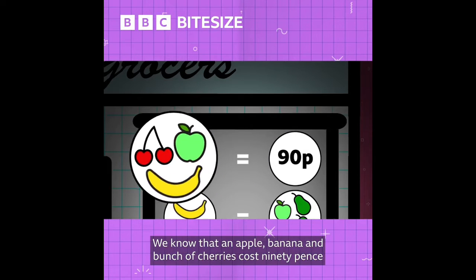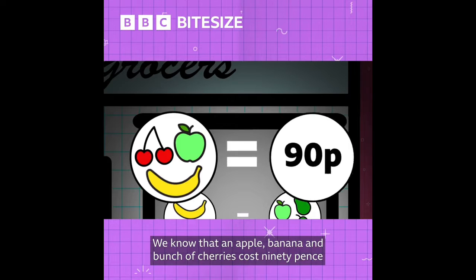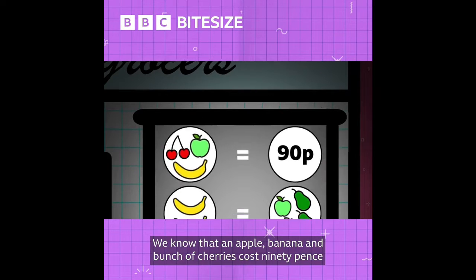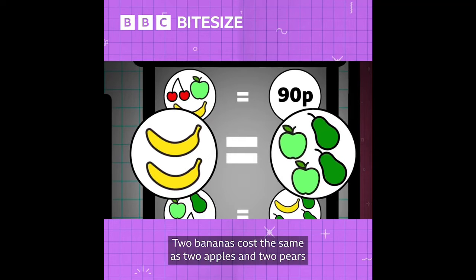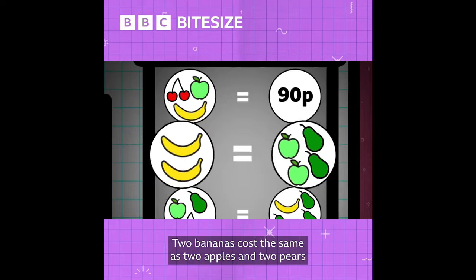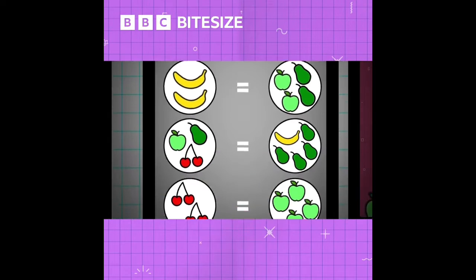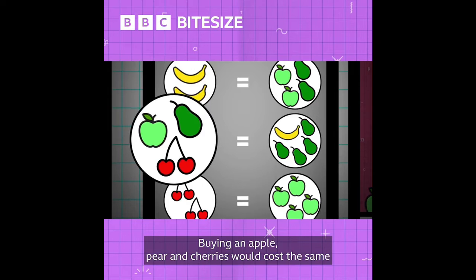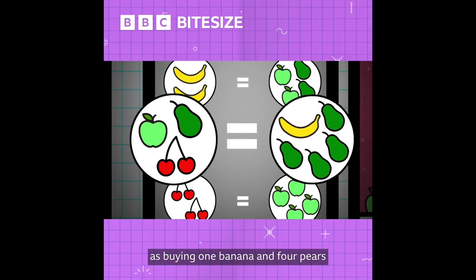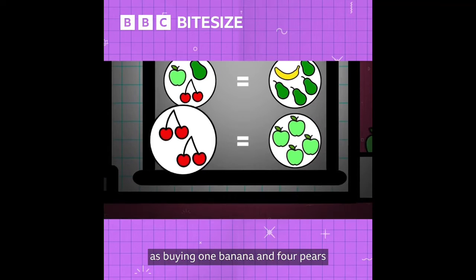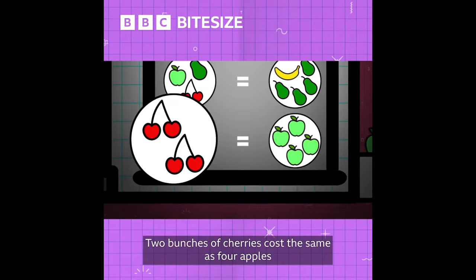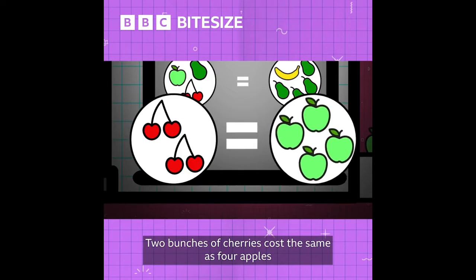We know that an apple, banana and bunch of cherries cost 90p. Two bananas cost the same as two apples and two pears. Buying an apple, pear and cherries would cost the same as buying one banana and four pears. Two bunches of cherries cost the same as four apples.